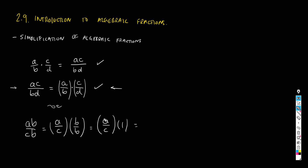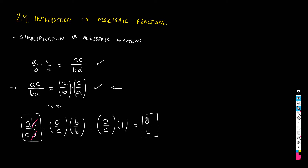We know that b/b equals one, and any number or fraction times one gives the same fraction. So yes, all of this ends up as a/c, and what looks like canceling the b's is really just applying this fact — it all boils down to cancellation of equal factors.